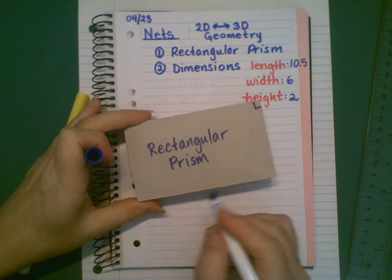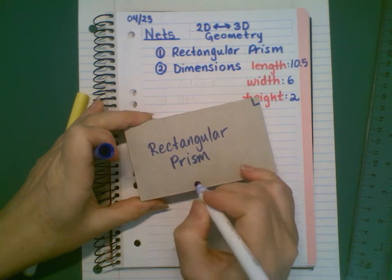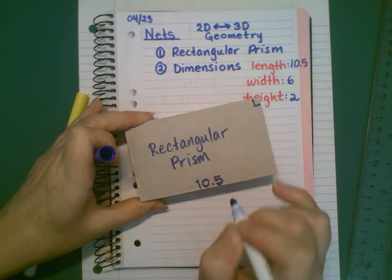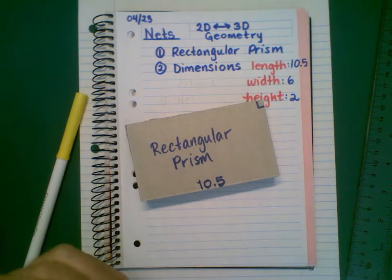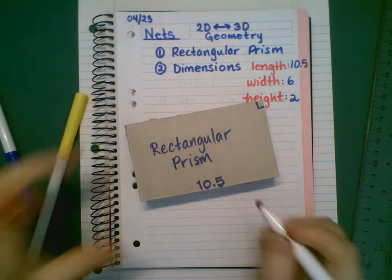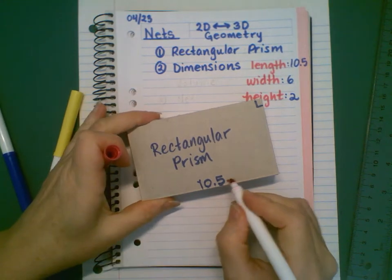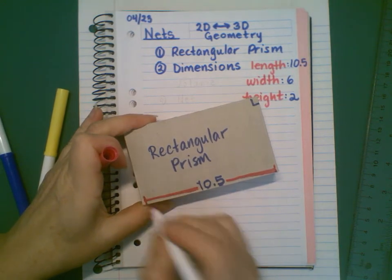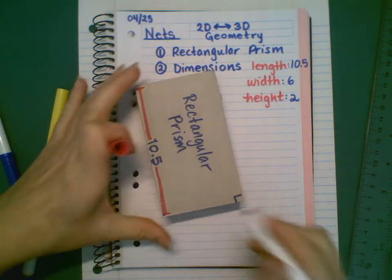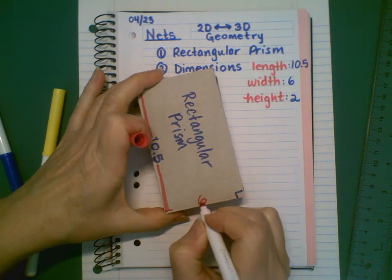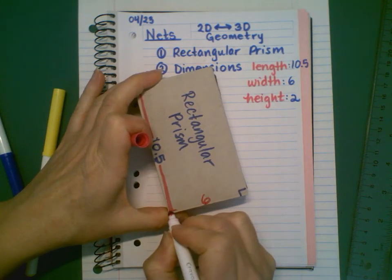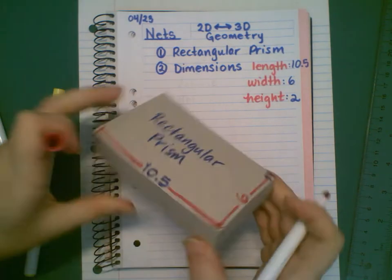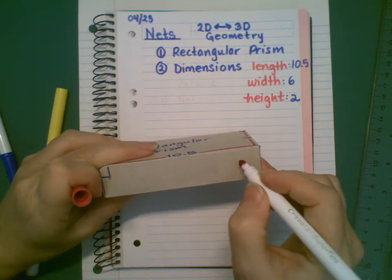So for the purposes of demonstration, I'm going to write those on here. The 10.5 goes from one edge to the other. Then this measure is six, and the height is two.